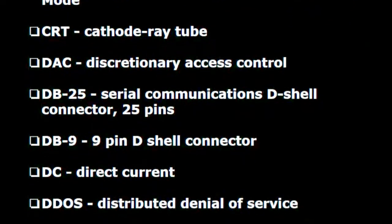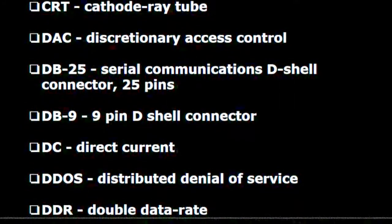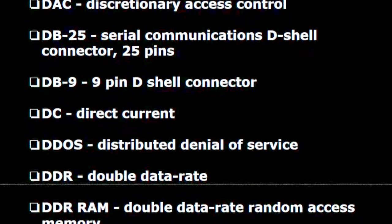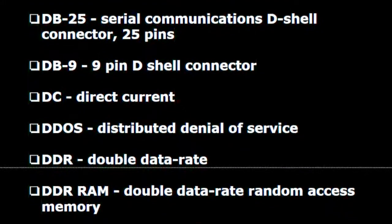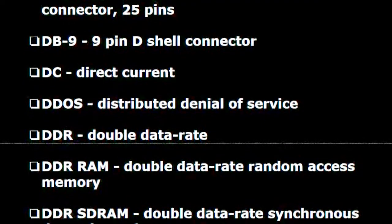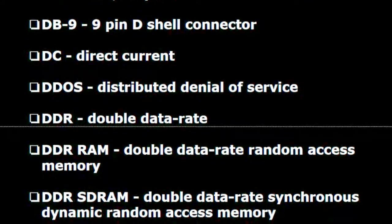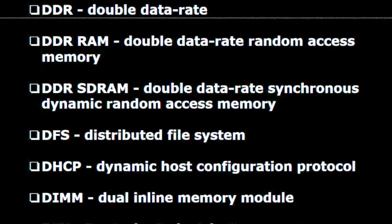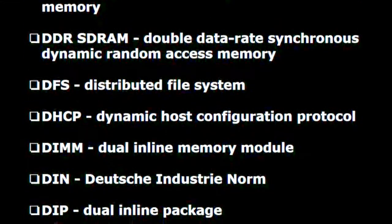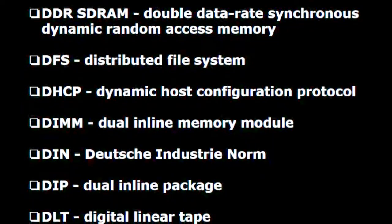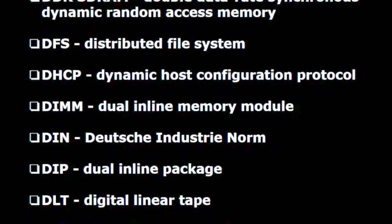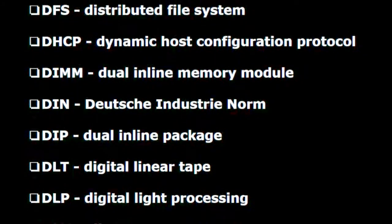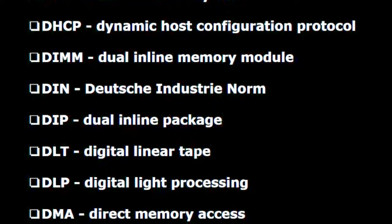D.B.25 — Serial communications D-shell connector, 25 pins. D.B.9 — 9-pin D-shell connector. D.C. — Direct current. D.DoS — Distributed denial of service. D.D.R. — Double data rate. DDR RAM — Double data rate random access memory. DDR SDRAM — Double data rate synchronous dynamic random access memory. D.F.S. — Distributed file system. D.H.C.P. — Dynamic host configuration protocol. D.I.M.M. — Dual inline memory module.